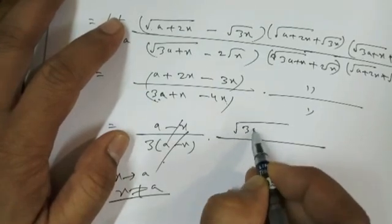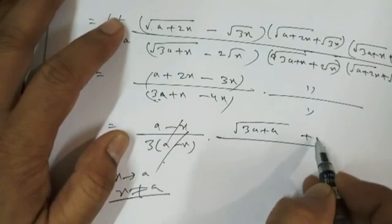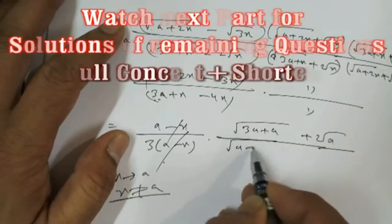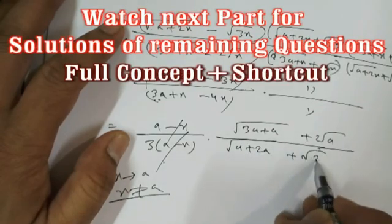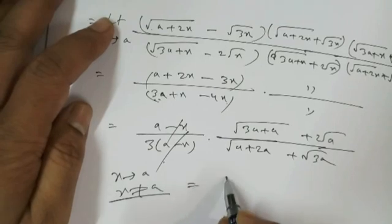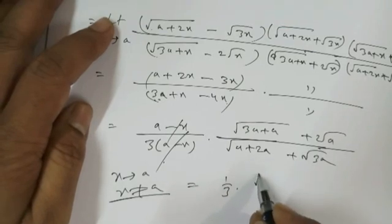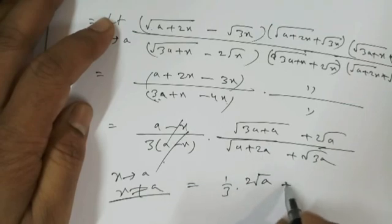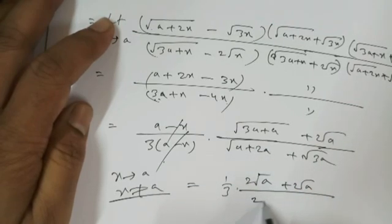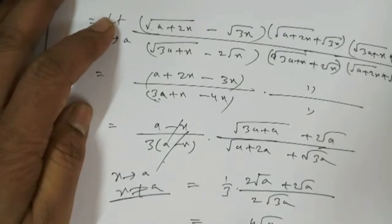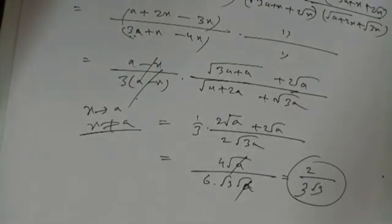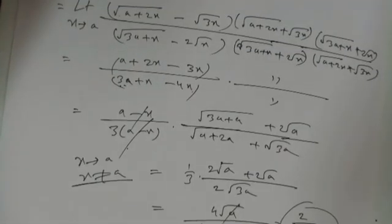After cancellation, put x = a. The denominator becomes (√(3a + a) + 2√a) and numerator simplification gives 1/3. This gives (4√a) over (6√(3a)·√a), and after further simplification, root a cancels, giving the answer: 2/(3√a).